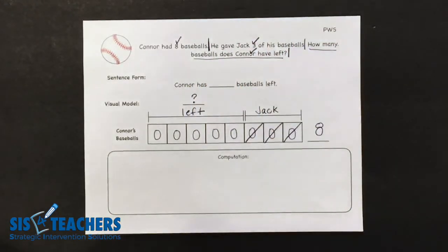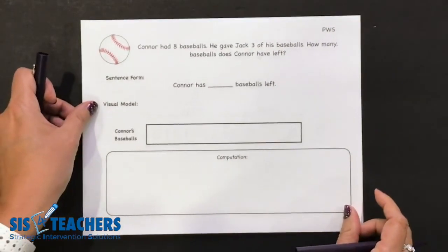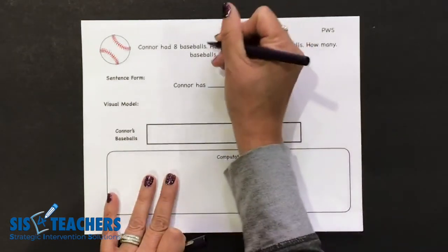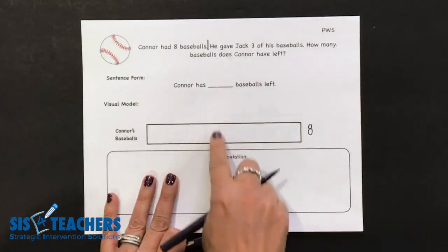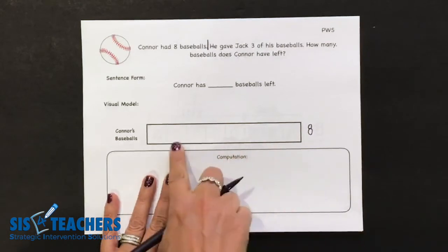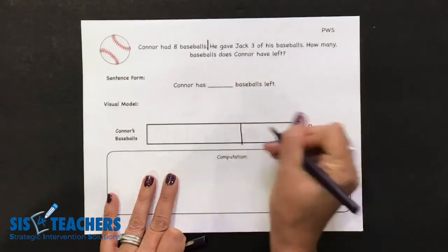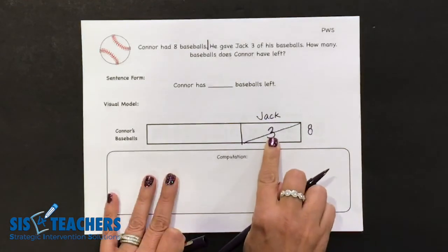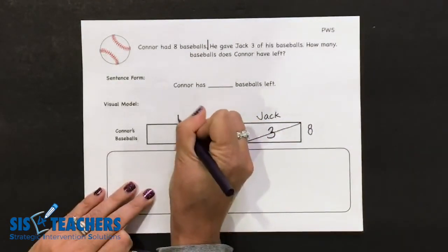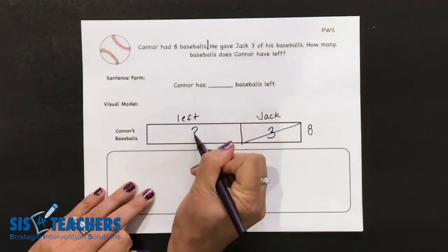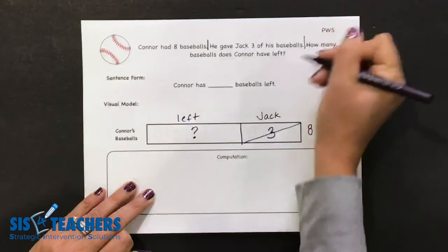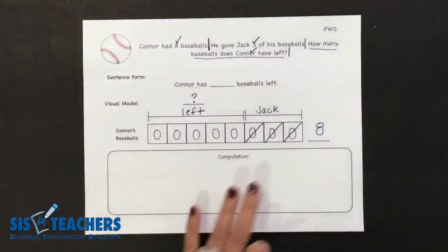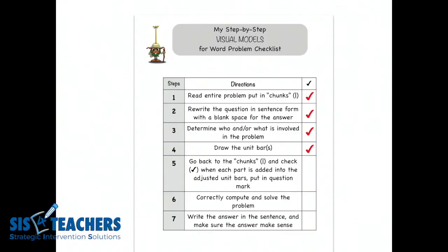For later in the year when students are ready for a part-whole subtraction problem on a non-proportional bar, we do the same process. This total bar equals eight, so I'll put eight. We don't write the individual pieces in here, but we know it represents eight. We know Jack took three of them, so approximately this section is for Jack — I'll write Jack at the top because he was given three of the balls. This remaining box represents how many is left, and we put the question mark in. If students are further along in the year, you can scaffold to this non-proportional bar.